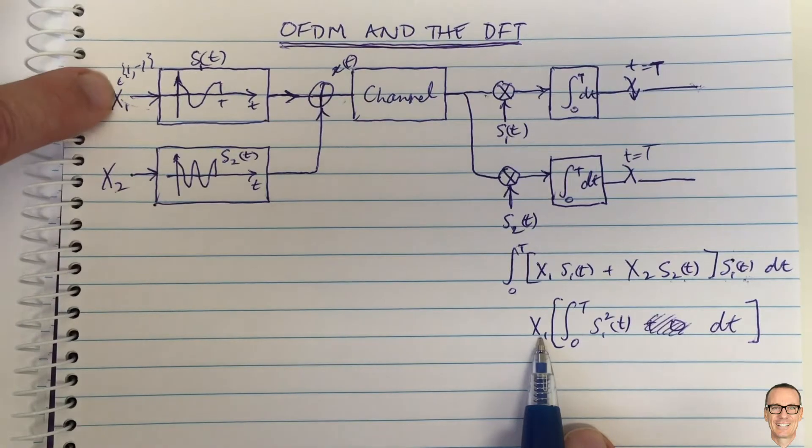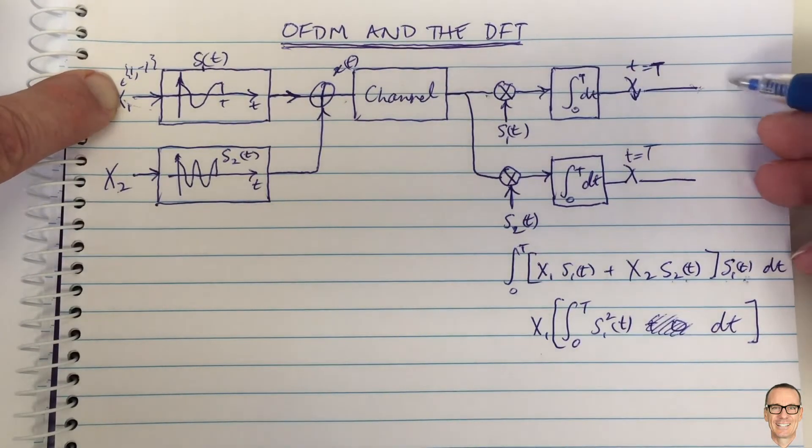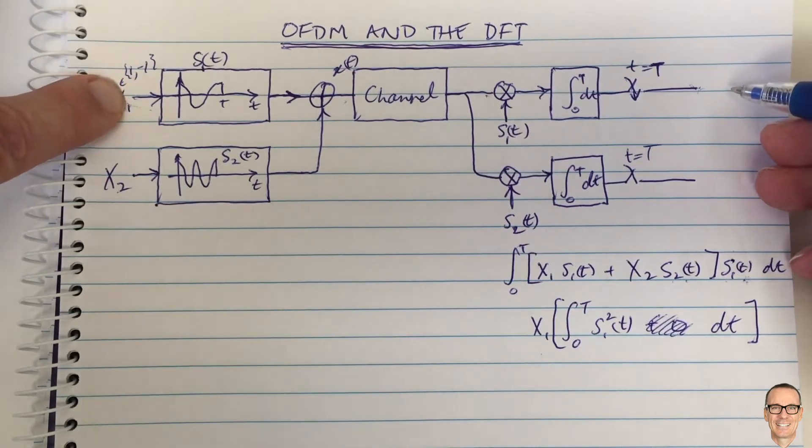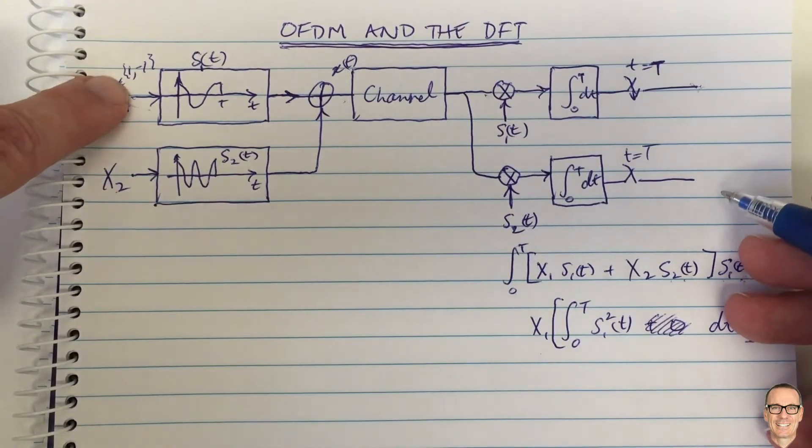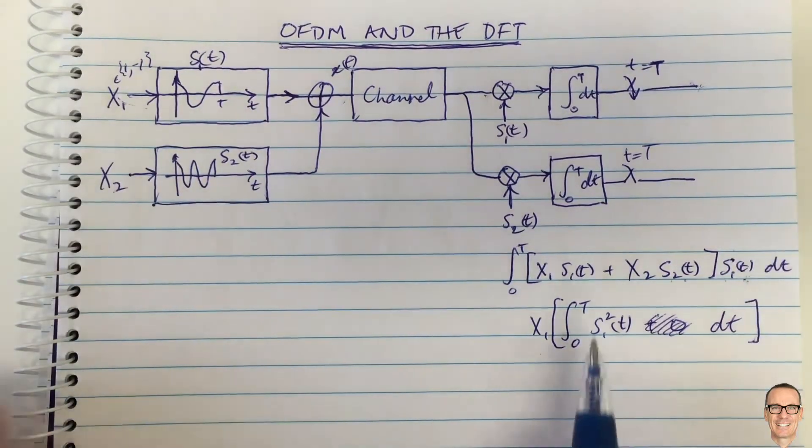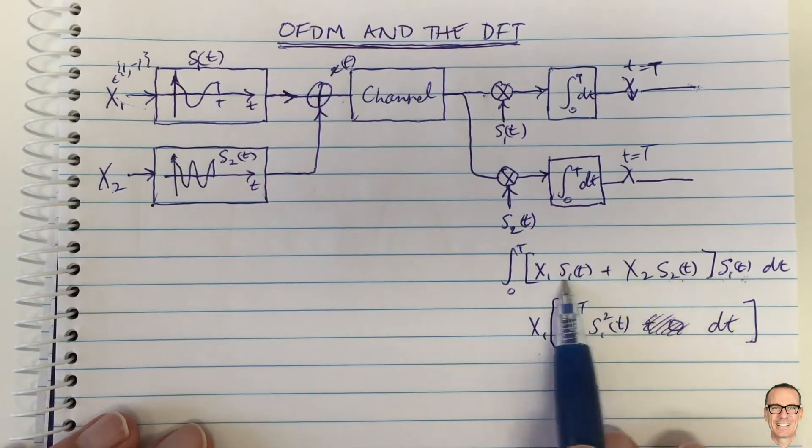This will be an amount of energy multiplied by the plus one or minus one, which will tell us whether the digital data at the input was plus one or minus one. Out of here we can detect the digital data that was in x1, and we don't see any effect from x2, and vice versa over here.